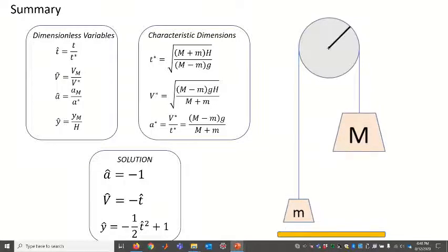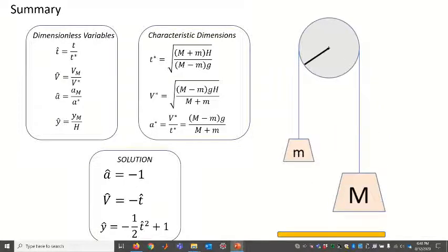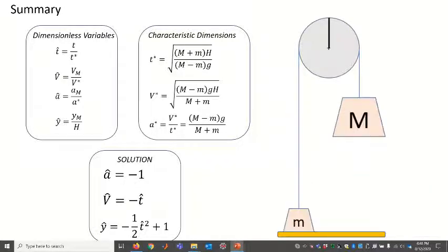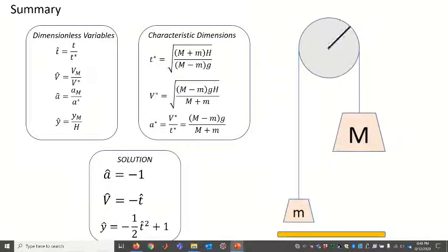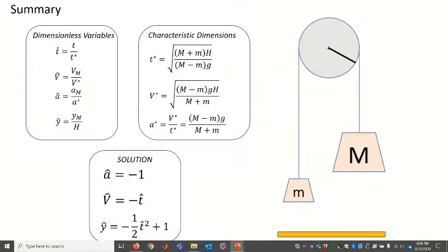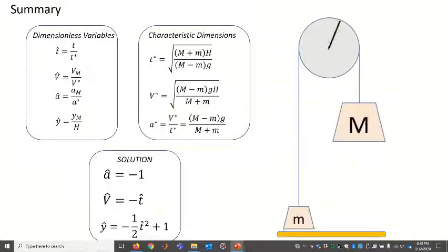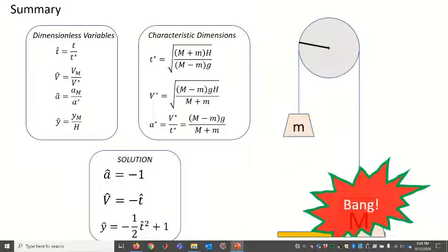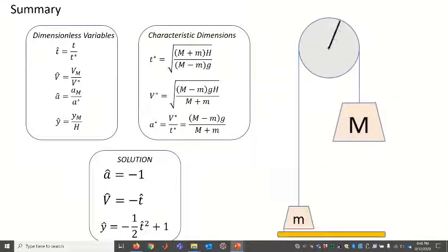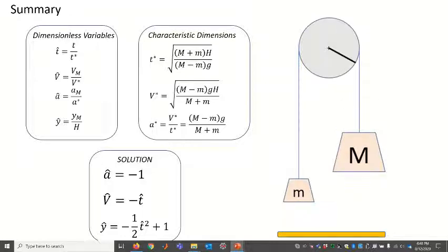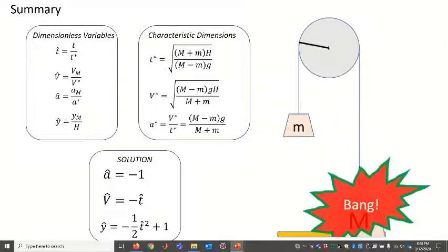The acceleration has a characteristic dimension that's shown, and a-star is really just going to be the constant acceleration of this system with its simplifications. The elevation of mass M is normalized by big H which is its initial height.